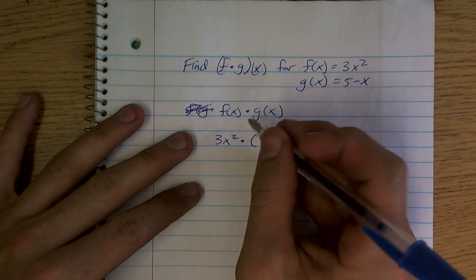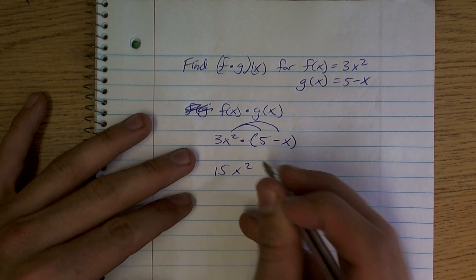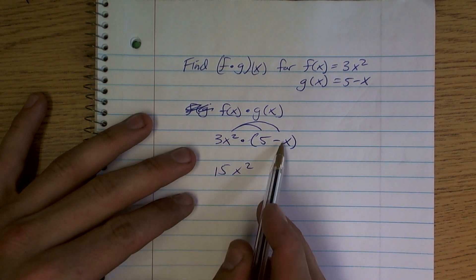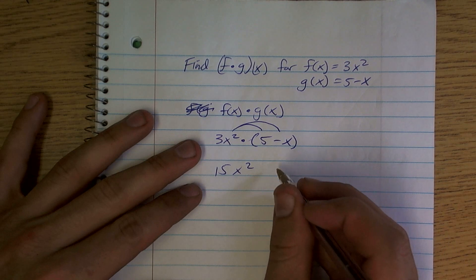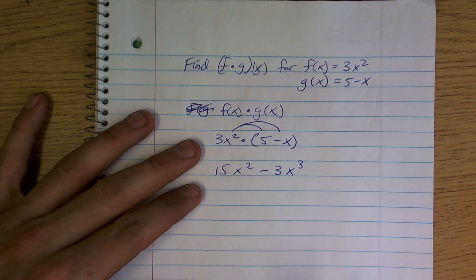So from here we're just going to apply the distributive property. So 3x squared times 5 is 15x squared, and 3x squared times negative x is going to give me negative 3x, and you're going to add the exponents cubed.